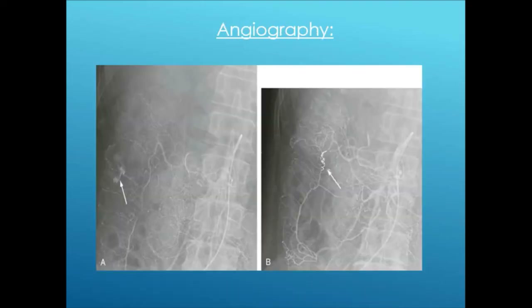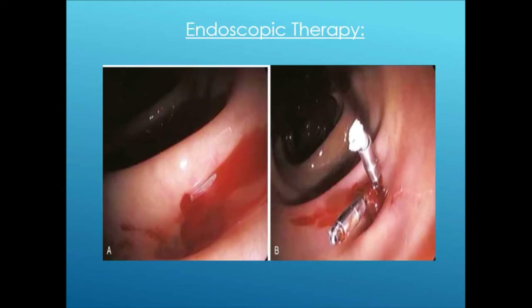An angiogram can show spillage of contrast at the bleeding site, and interventional radiologists can place coils to stop the bleeding. For endoscopic management, clips are preferred — they stay in place for a couple of months and then fall off. The literature also describes heater probe with epinephrine, but that risks transmural burns in the colon.